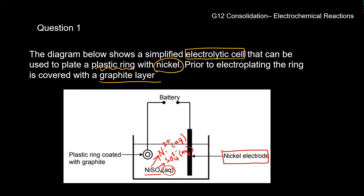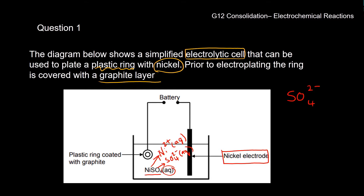How did I know that nickel was 2+? I know that the sulfate ion always has a charge of 2−. So for the compound to be neutral, there has to be a 2+ charge on the nickel. In other words, its oxidation number is 2+ in this compound. That is our electrolyte.